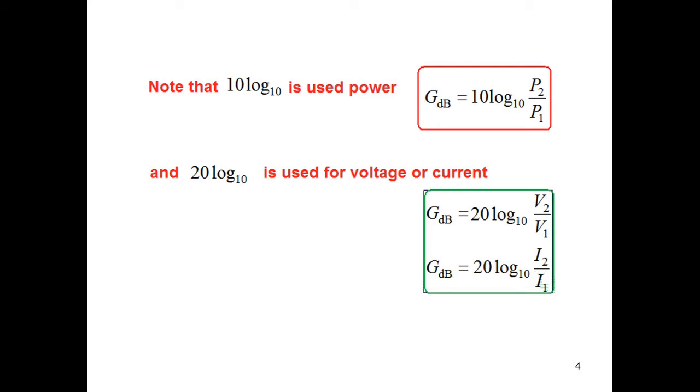So we have to keep in mind that when we are taking ratio of power, then we multiply by 10 to get the decibel, but when we are comparing voltages or currents, then we multiply by 20 to get the decibel values.